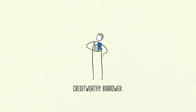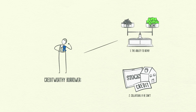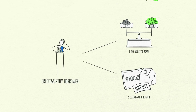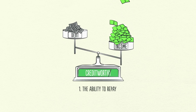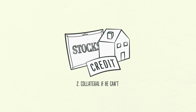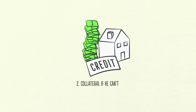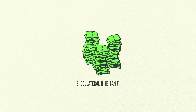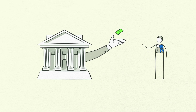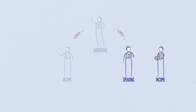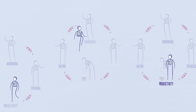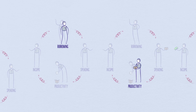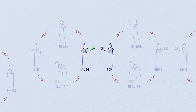A credit-worthy borrower has two things: the ability to repay and collateral. Having a lot of income in relation to his debt gives him the ability to repay. In the event that he can't repay, he has valuable assets to use as collateral that can be sold. This makes lenders feel comfortable lending him money. So increased income allows increased borrowing, which allows increased spending. And since one person's spending is another person's income, this leads to more increased borrowing, and so on. This self-reinforcing pattern leads to economic growth and is why we have cycles.